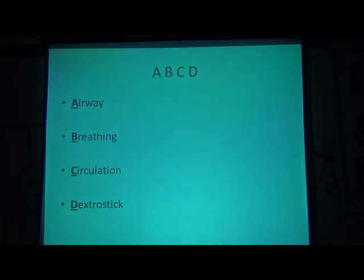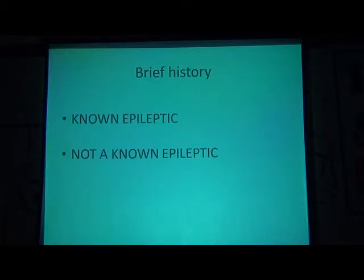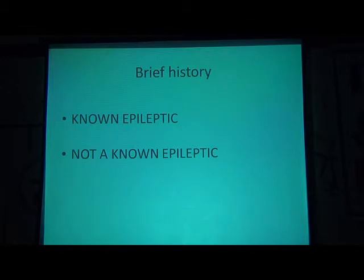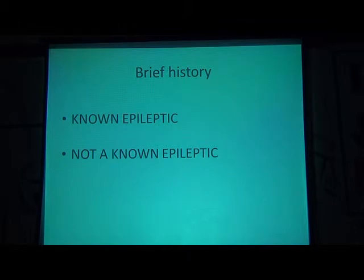This is the ABCD approach for status epilepticus, as for any other emergency: A for airway, B for breathing, C for circulation, D for dextrostix. In taking a brief history for a child with status epilepticus: first, ask whether the child is a known seizure patient. If yes, check for missed medications — missed medications are the commonest cause of status epilepticus. If not a known epileptic, ask about birth and family history, and whether there are any precipitating factors like fever, headache, vomiting, or head injury. In pediatric practice, always ask about neem oil injection — camphor is an irritant that can cause status epilepticus.